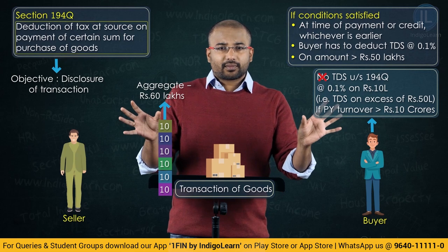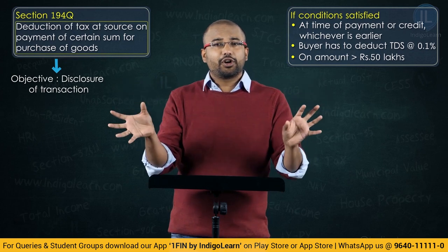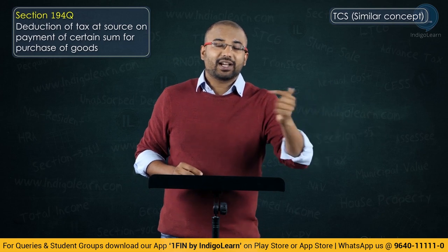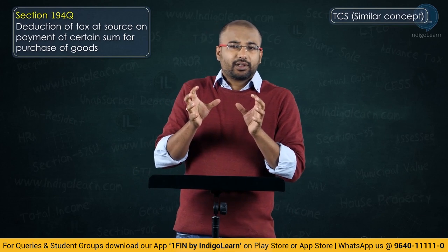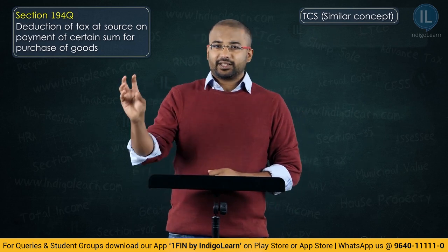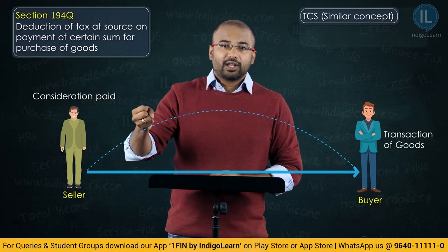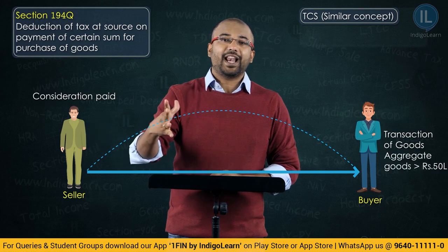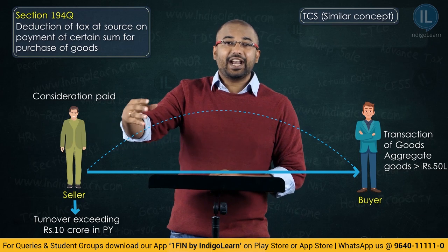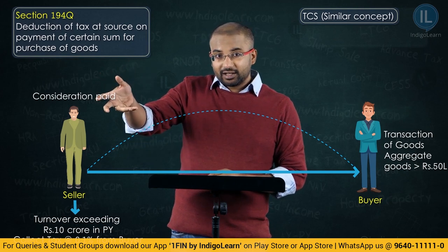Now I want to introduce a similar section that was also introduced for TCS. We are talking about TDS — for the buyer who is paying the consideration. A similar section is also introduced in the chapter of TCS. That TCS section says: there is a seller and a buyer, and this seller who is selling goods — if the aggregate value exceeds 50 lakh and his turnover has exceeded 10 crore in the preceding financial year — he will collect an additional 0.1% from the buyer.